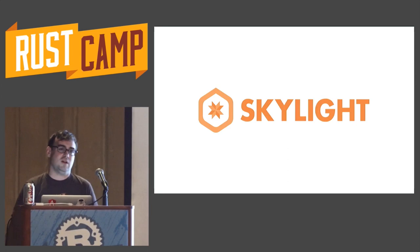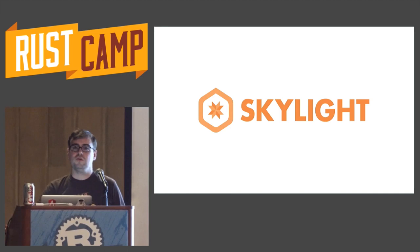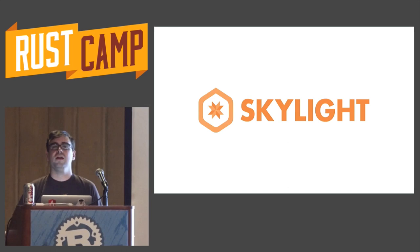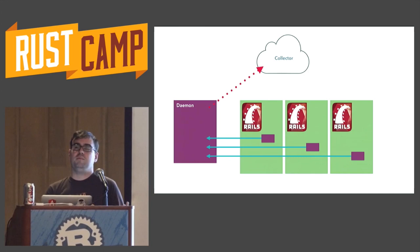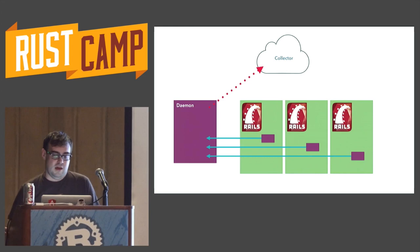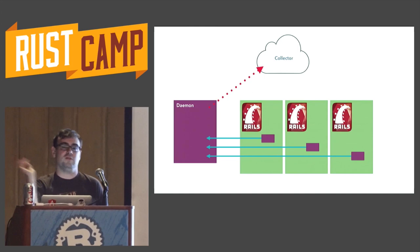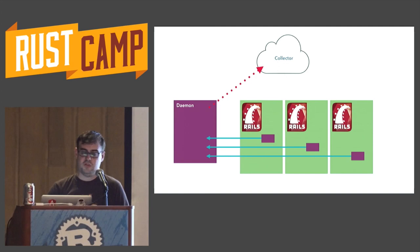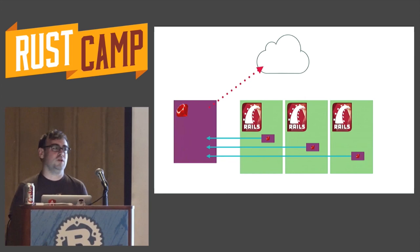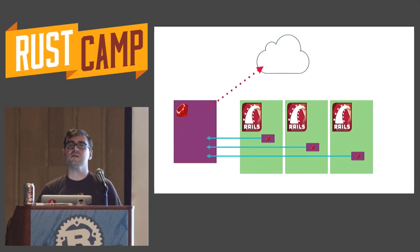Skylight is a small company. We have about seven engineers, and those seven engineers largely had never written systems code before. What we were building was basically a product that allowed you to instrument your Rails application so we could give you better information. There were already people in our field that were very big 800-pound gorillas with many engineers. We wanted to compete in this area with a very small number of engineers. Fundamentally, what this thing does is it collects information, sends it off to a daemon, the daemon sends it to the server, we collect it, we process it, we give you some information.